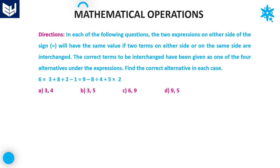Let's move on to the next question. Option A says to interchange 3 and 4: here it becomes 4 where 3 was and 3 where 4 was. First priority is division: 8 by 2 is 4. Then multiplication: 6 into 4 is 24. 24 minus 1 gives 27 — left hand side is 27.